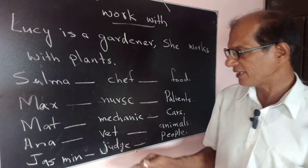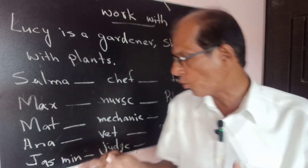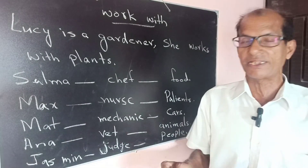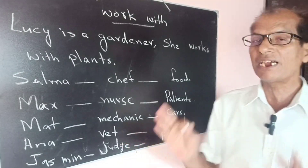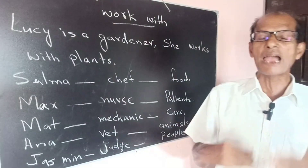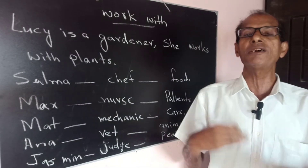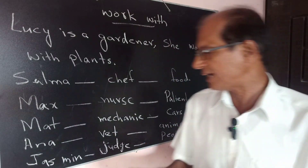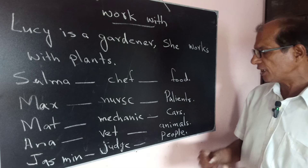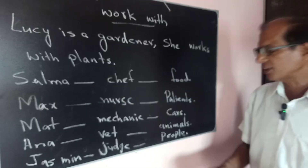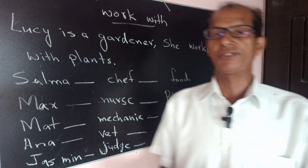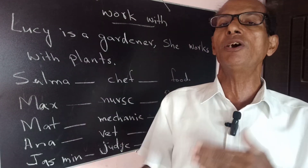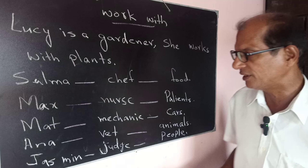Now Anna is a vet. A vet is an animals' doctor. Anna is a vet. She works with animals. With whom does she work? She works with animals.